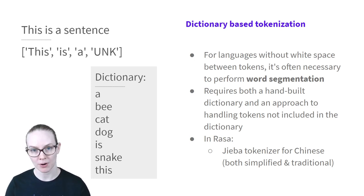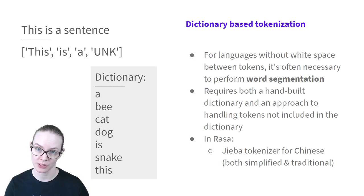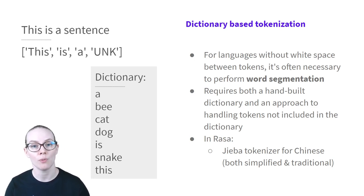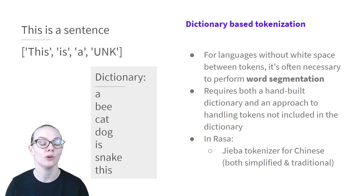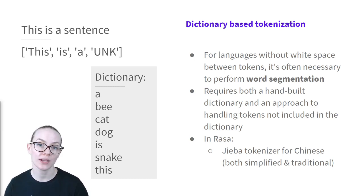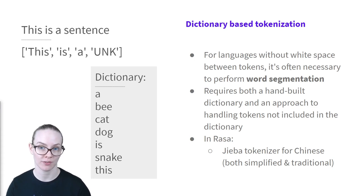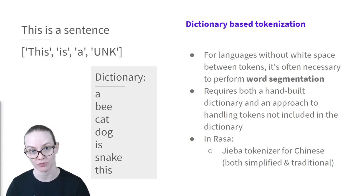This approach requires both a dictionary that's been hand-built, and also guidance for what to do when you find a token that's not in the dictionary. In this case, it's been replaced with the token UNK for unknown. One example of a dictionary-based tokenizer in Raza is the jieba tokenizer for Chinese.